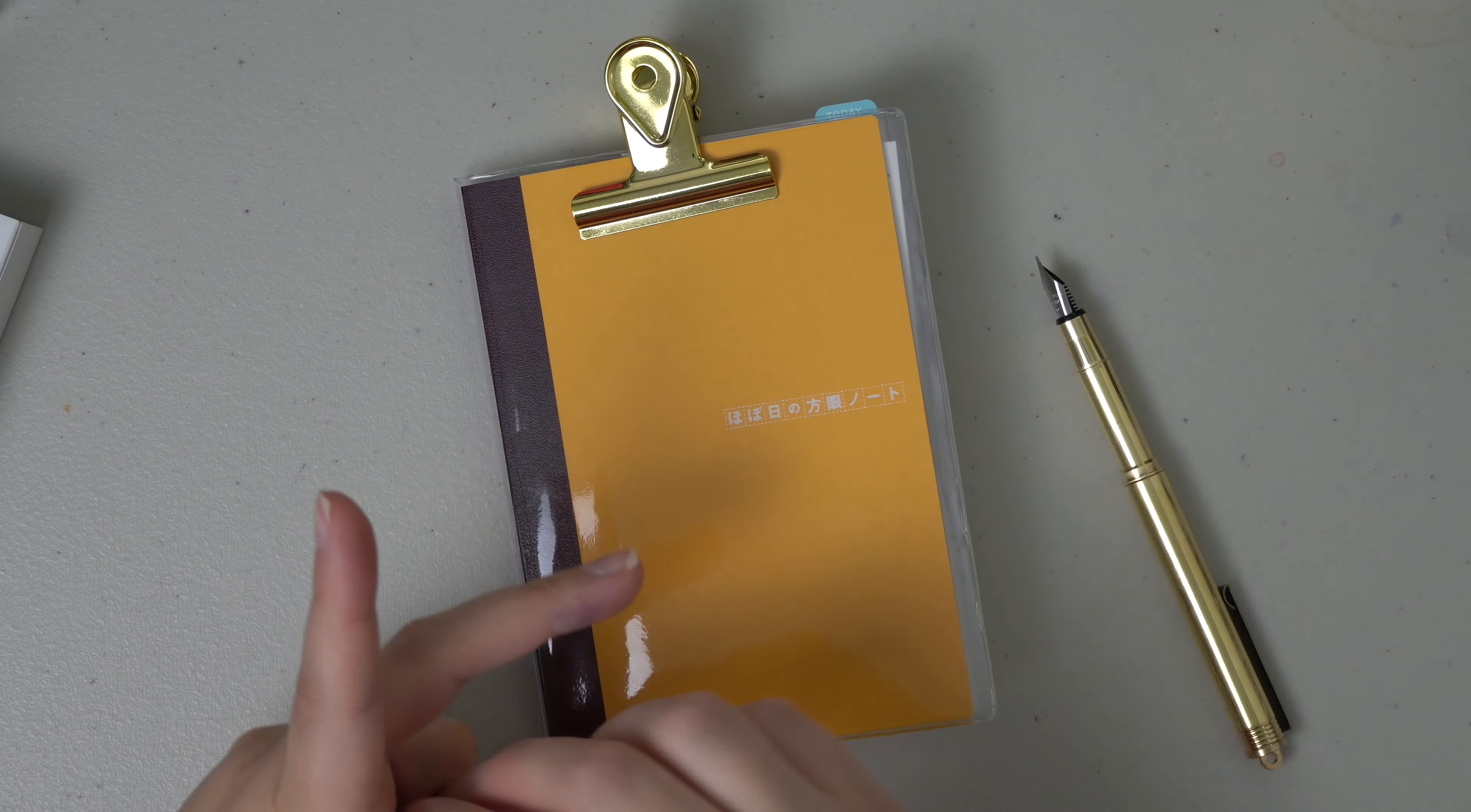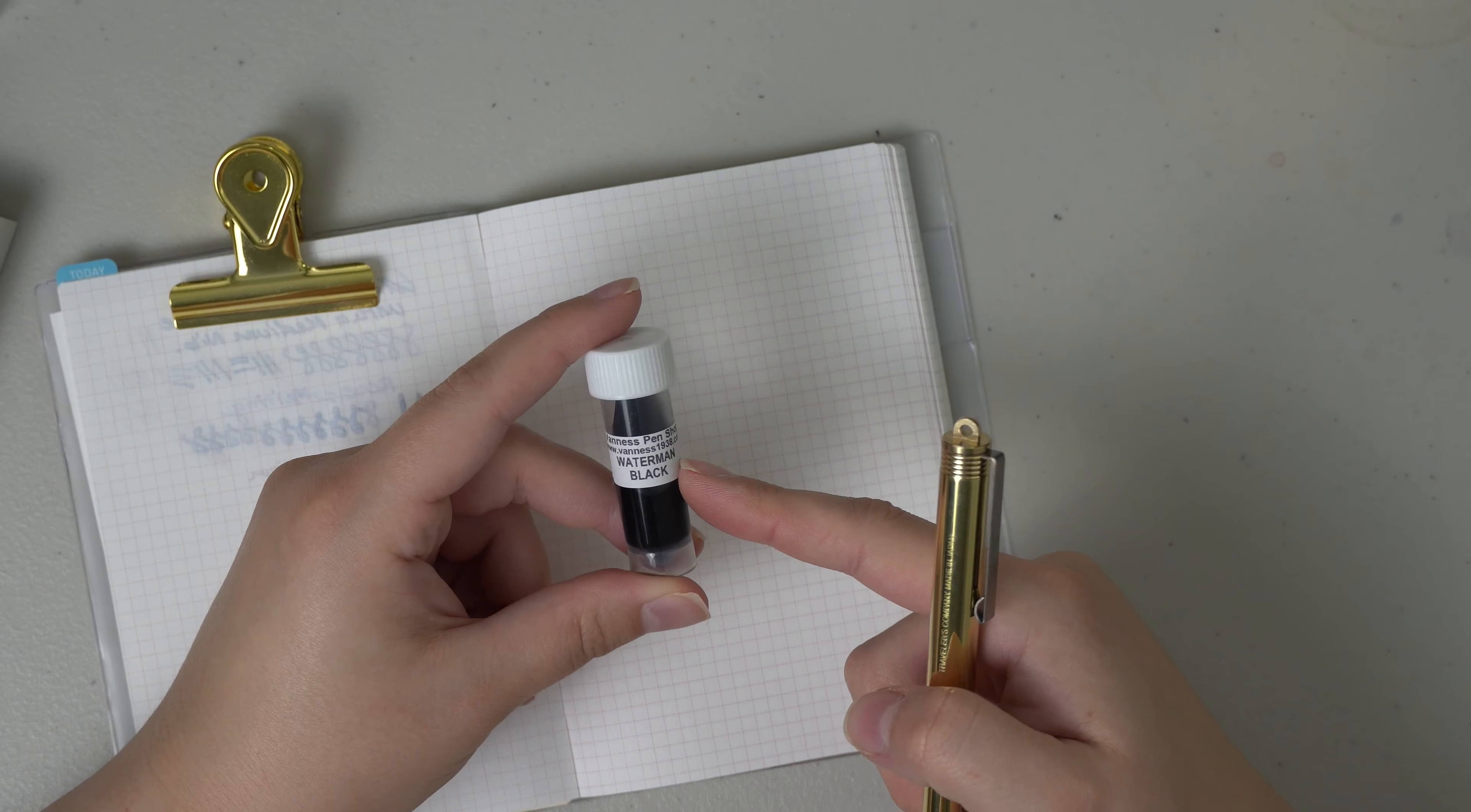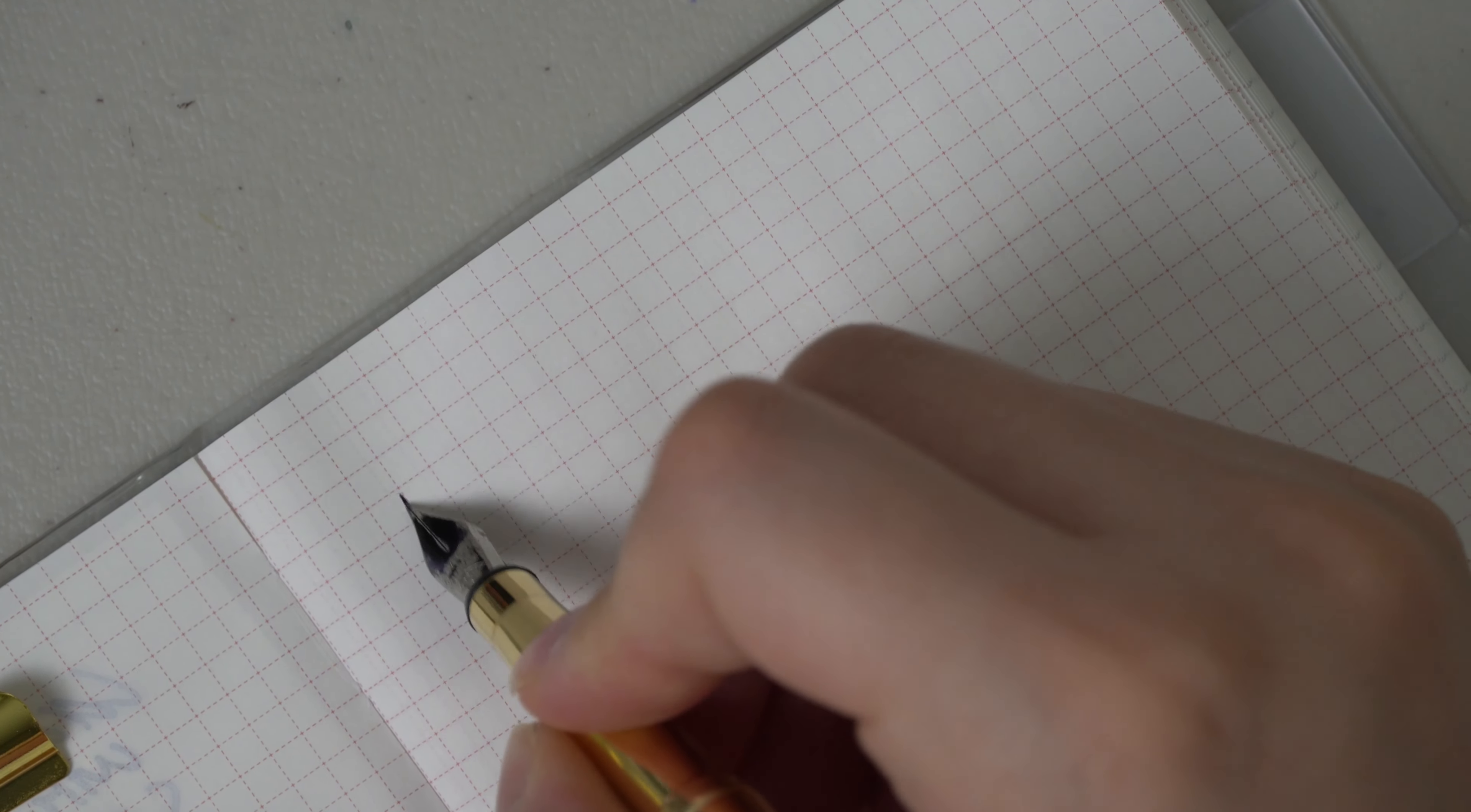Okay. So this is just a Hobonichi A6 notebook, and I'm going to flip to a clean page here. And I'm going to be dip testing because I don't want to put the cartridge in the pen and I don't have a converter that I'm ready to put in this pen either to ink it up. So we're going to be using Waterman Black to test out the writing. Oh, and I got ink all over the pen body. Hold on. So this is the Traveler's Company.